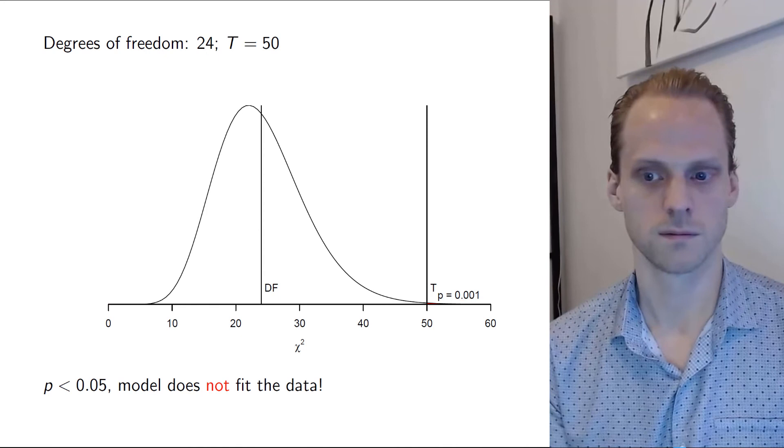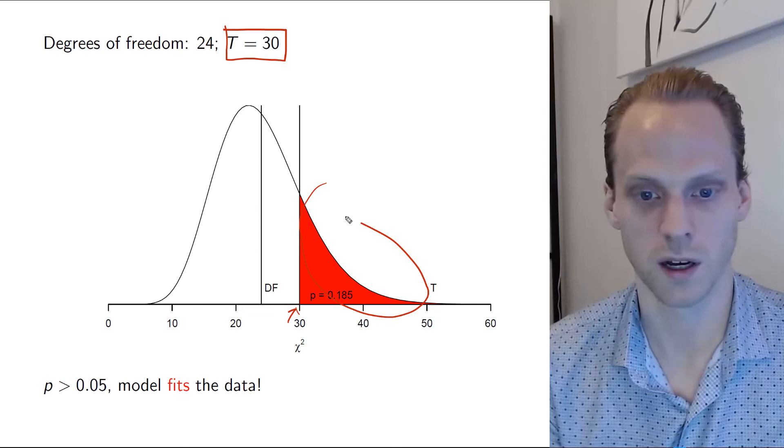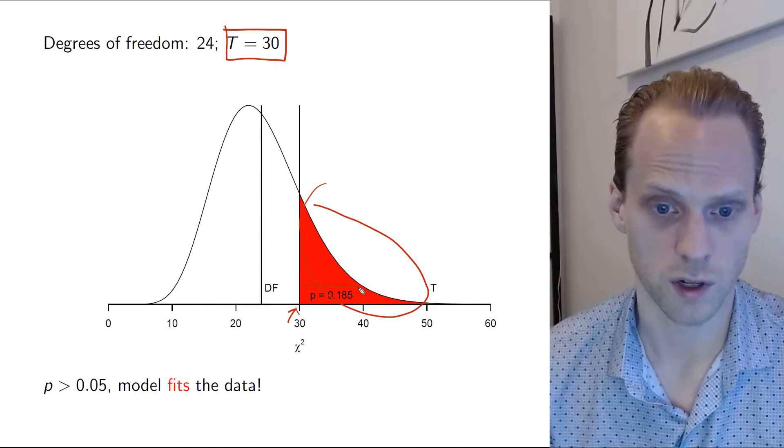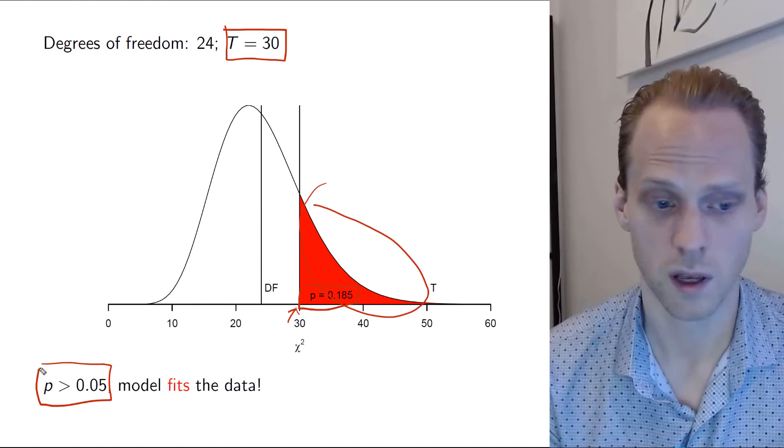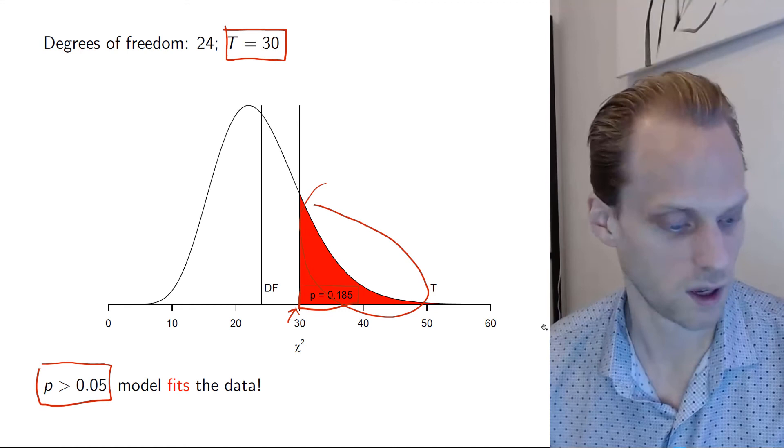Now here I have another hypothetical example. We have a test statistic of 30. And now the test statistic is here. So we have a larger range or a larger probability mass. We get a p-value of 0.185. And that is above 0.05. So it's a good thing in this case. So then we would say we would not reject the hypothesis. And then we can actually say that the model fits. And what we can actually say then is that we tried to reject the hypothesis for exact fit and we couldn't. So that's a good thing.